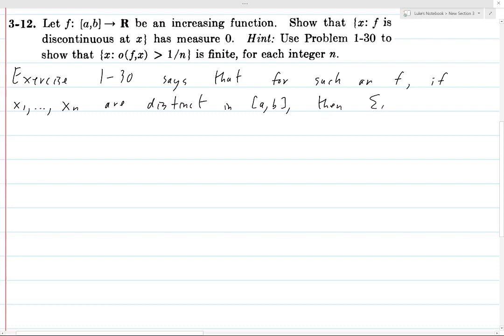Then the sum from i equals 1 to n of the oscillation of f at xi is going to be strictly less than f(b) minus f(a). Now this is an exercise that we already proved and you can go back and look at that video.